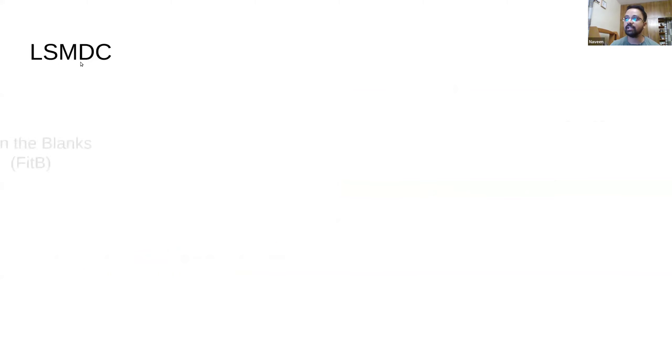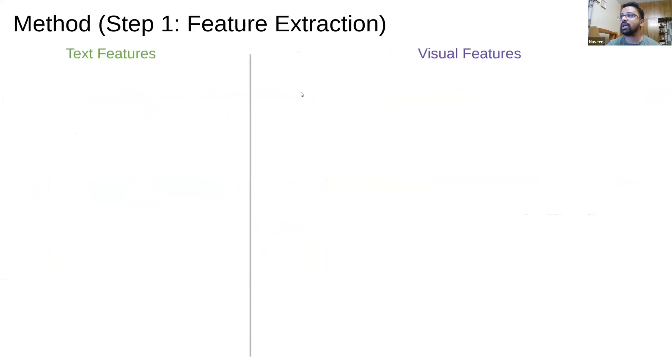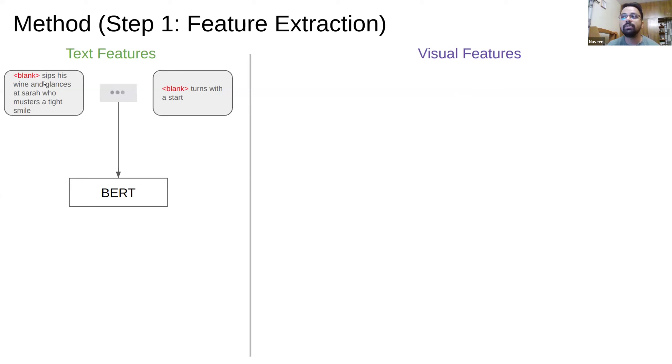MICap stands for Movie Identity Captioner. The architecture has a transformer encoder block and decoder block. We extract various features from the video and pass these as captioning memory through the encoder, which is then passed to the decoder for both tasks — fill-in-the-blank and full captioning — jointly trained. For feature extraction: text features for the fill-in-the-blank task are passed through BERT to extract blank embeddings. For visual features, we use I3D features trained on Kinetics-400 for action, and CLIP features for face features and semantic understanding.